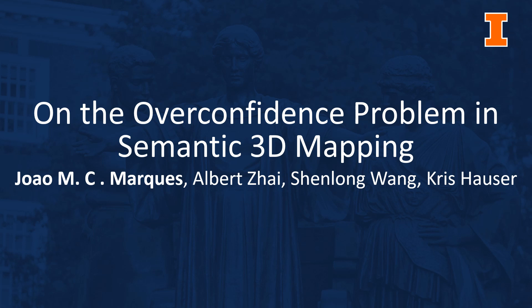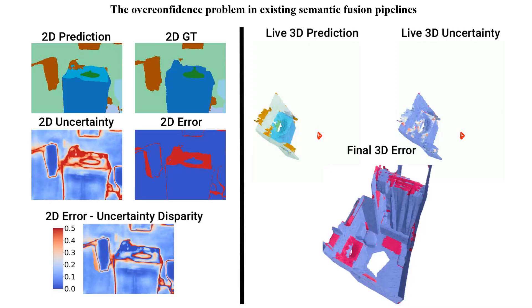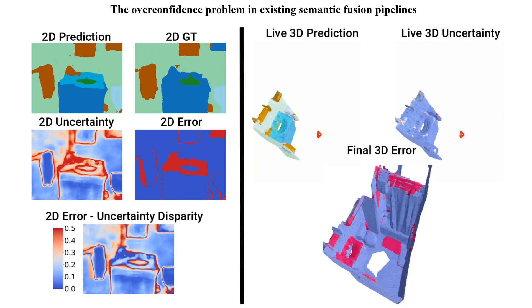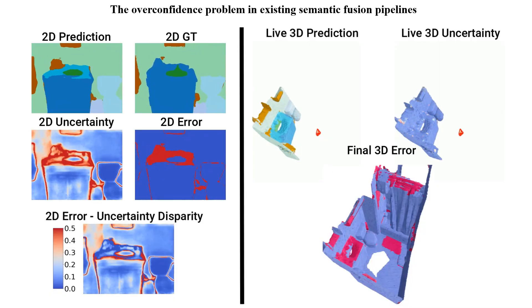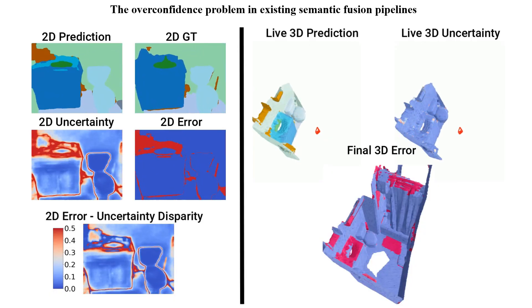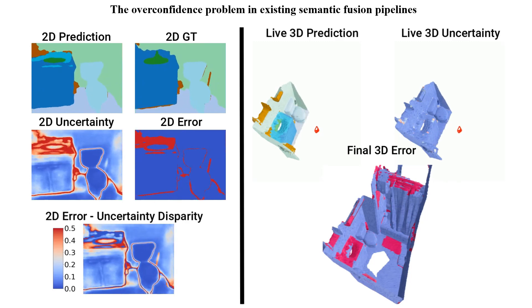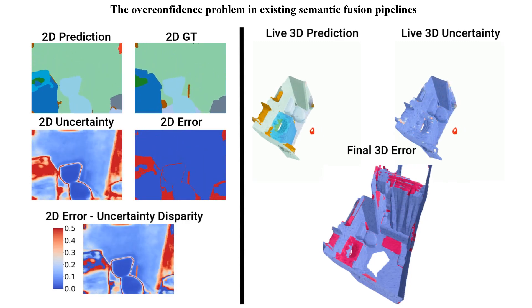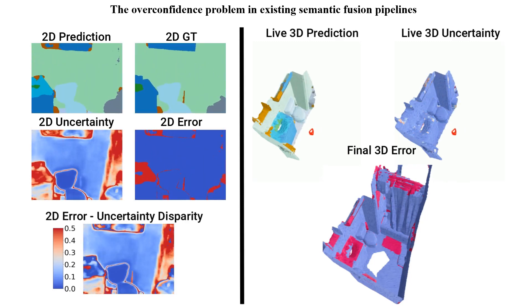In this paper we present and analyze the overconfidence problem in semantic 3D mapping. In semantic 3D mapping, predictions from an image segmentation model are integrated to reconstruct and segment the 3D environment.